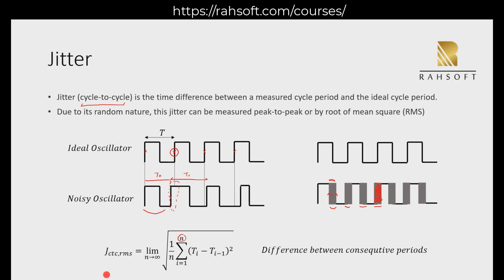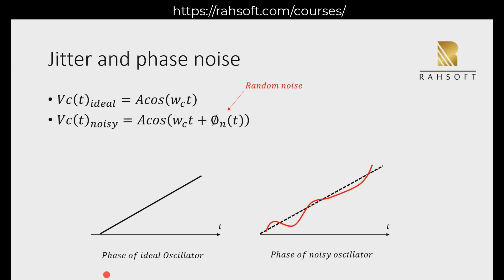So up to now we kind of understood what jitter is. Basically, jitter is the same as phase noise — it actually comes from phase noise. They're both related to each other. But generally we observe phase noise in a spectrum, in the frequency domain, where we check the spectrum.